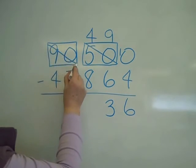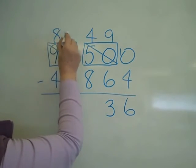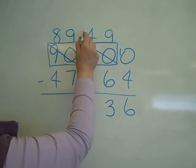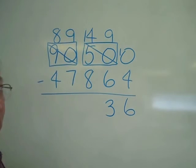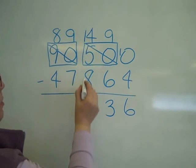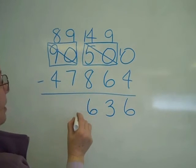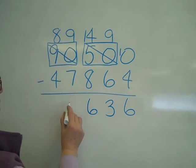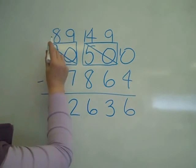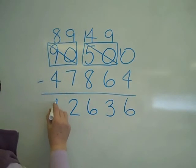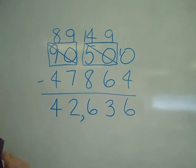Take 1 away from 90, gives me 89, and it makes that number a 14. So 14 minus 8 is 6, 9 minus 7 is 2, and 8 minus 4 is 4. 42,636.